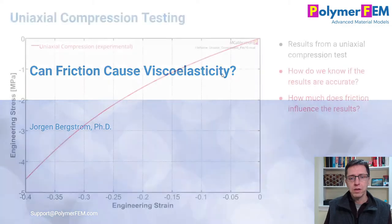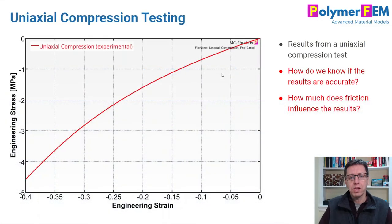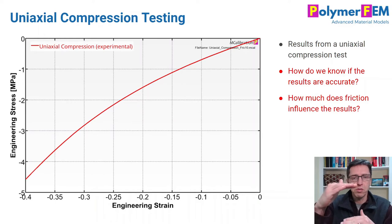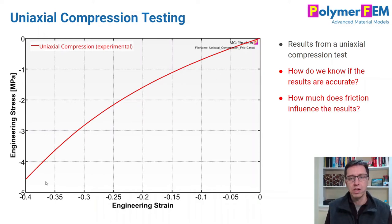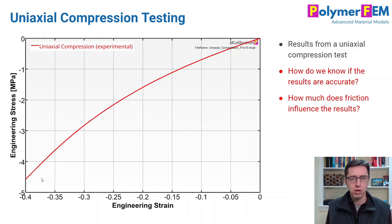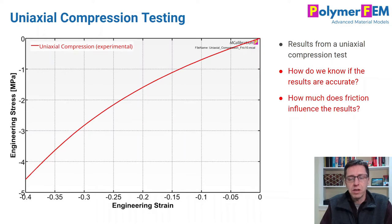I will start by talking about a uniaxial compression test. This is a monotonic test. I take my specimen, I compress it to about 40% strain, and the data looks fine. It's a uniaxial test, it's monotonic, the stress-strain curve looks reasonable. But how do we know if this data is good? How do we know that the data is accurate? Particularly when it comes to friction — and that's really what this is all about.